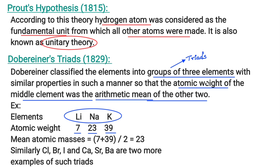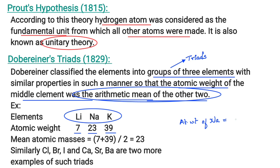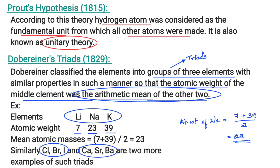Döbereiner also showed that the atomic mass of the middle element is the arithmetic mean of the other two elements. For example, the atomic mass of sodium equals (7 + 39) / 2 = 23. Similarly, chlorine, bromine, and iodine form a triad, and calcium, strontium, and barium form another triad.